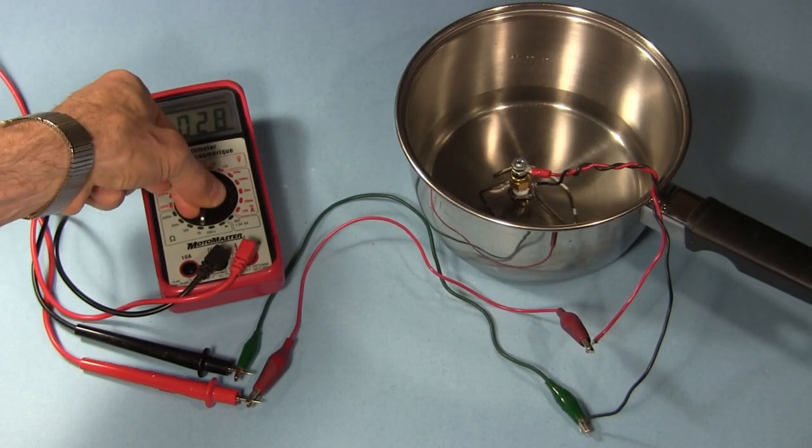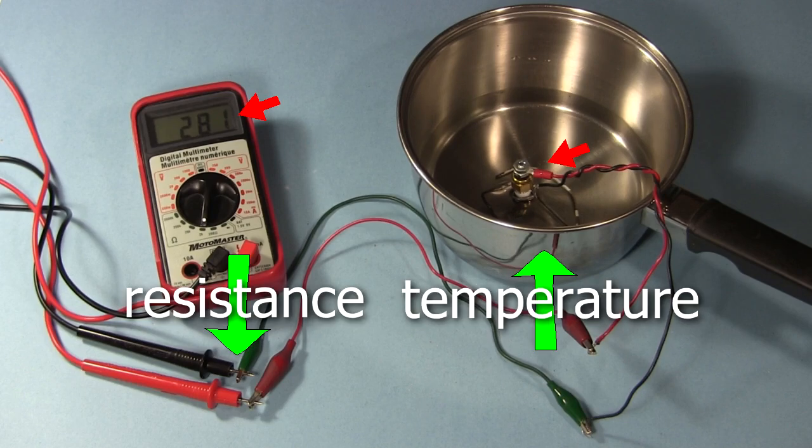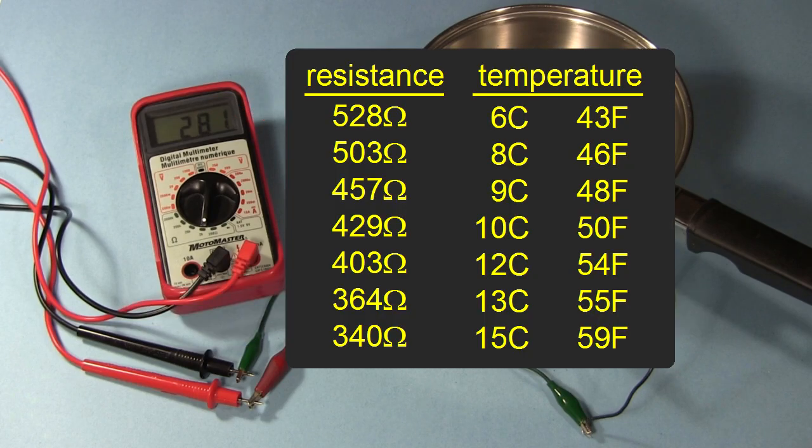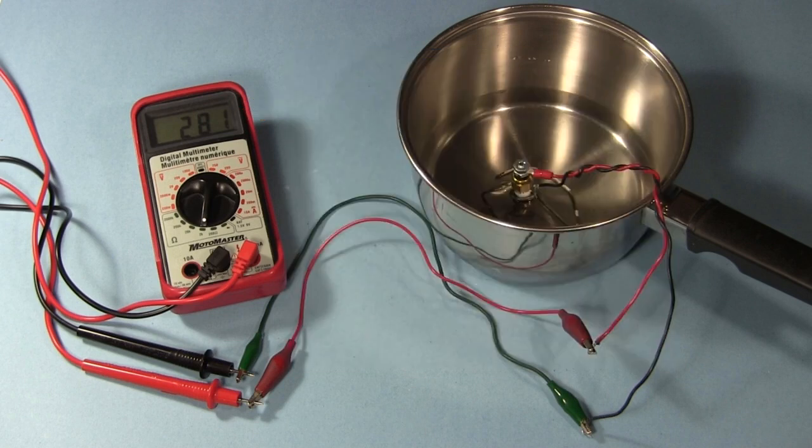One way to use it is to connect it to a meter that's set to measure resistance. As the temperature increases, the resistance on the meter decreases. If you know what resistance equates to what temperature, then you can monitor the temperature that way, by taking resistance measurements. In another video I show how to figure out the resistance temperature relationship, since I couldn't find that information anywhere for this one. More about that at the end.